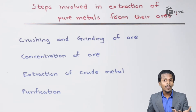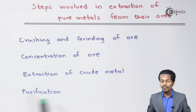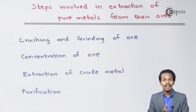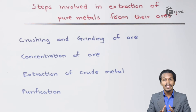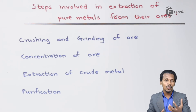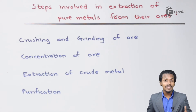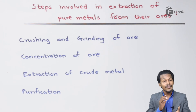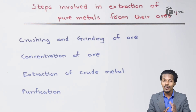Once the crude metal is obtained, the next thing we have to do is purify it. The purification step is the most important step, because in this step we get a pure metal from its ore. So these are all the steps that should be followed when extracting metal from the ore.